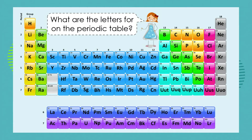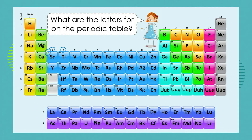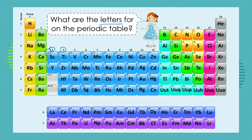Remember, in our last lesson we saw the periodic table for the very first time, and we learned that there are colors on the periodic table to help us understand the different properties of the elements. We also learned that there are numbers on the periodic table, and we're going to explore those numbers in another lesson. Today we're focusing on the letters in the periodic table — we can see that there are letters, and those letters stand for the names of the different elements.